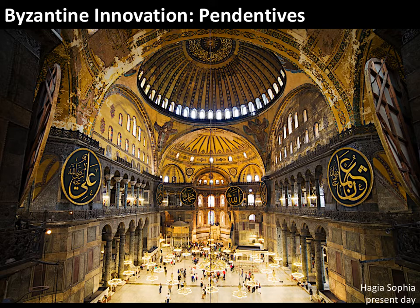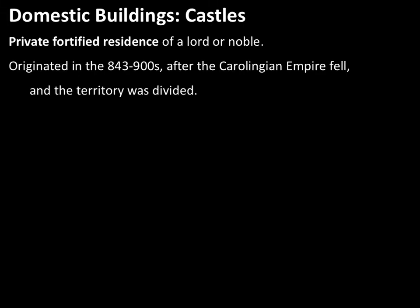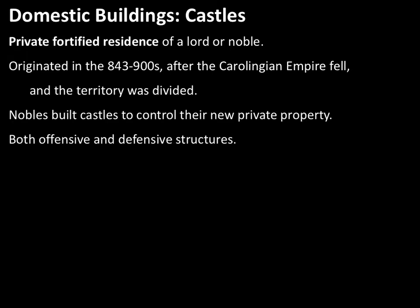We have both Roman and Byzantine influences showing up in the Romanesque period. Starting with domestic structures — if you think about the Middle Ages, you think castles. Castles were private residences for a lord or noble with a lot of money, fortified to help stave off invasion. They came about in the Romanesque period as territory started to be divided up and people began to think about private property, needing to protect their land from outside invasion.